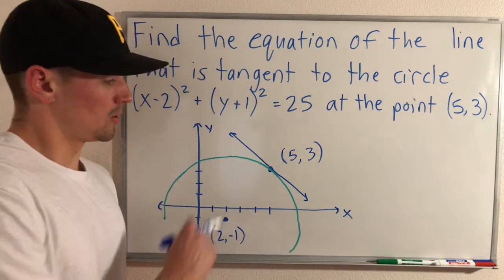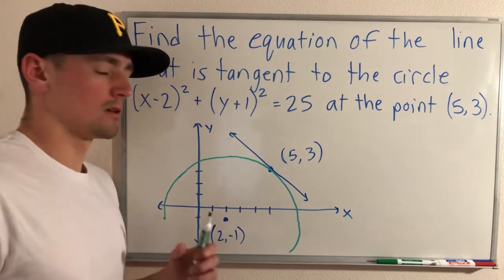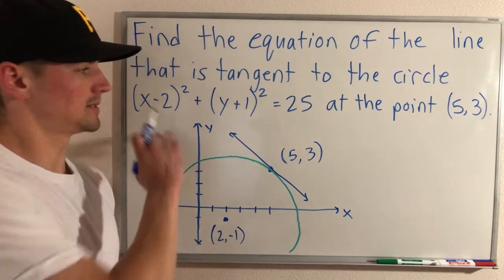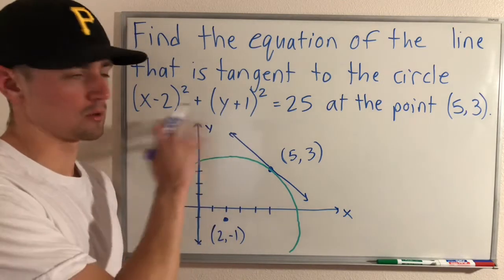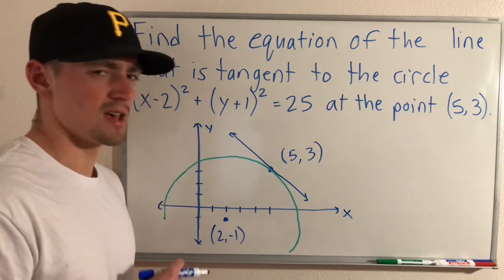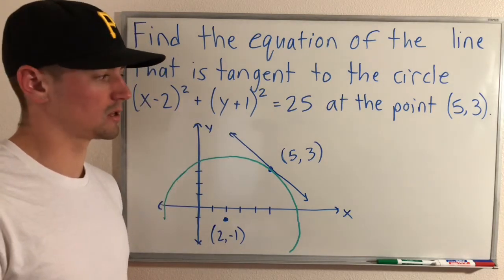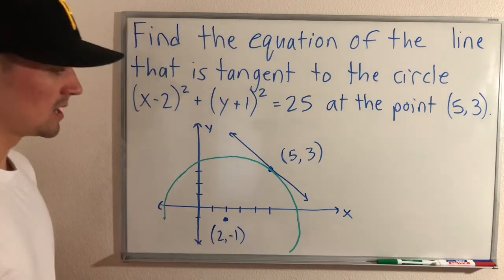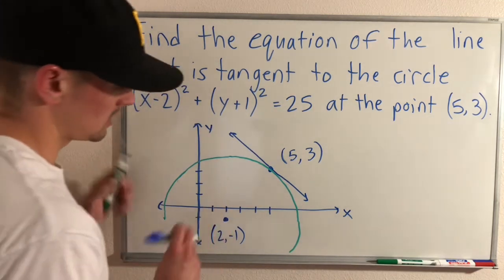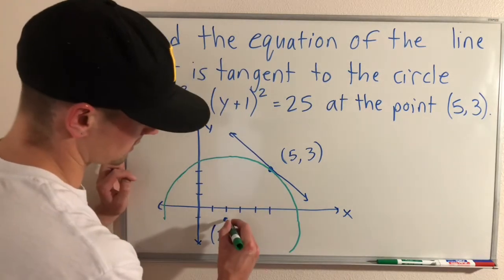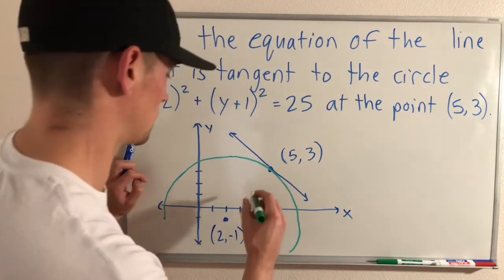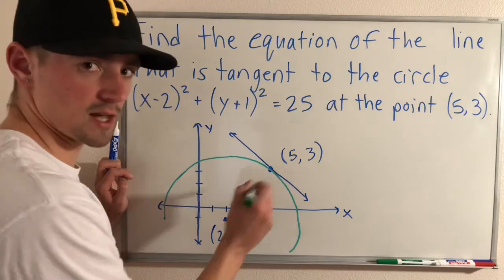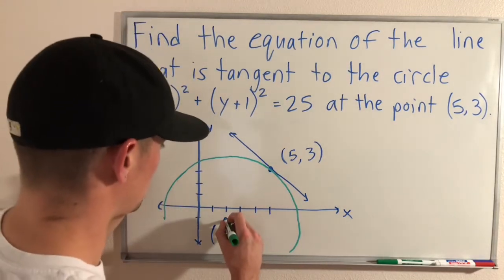So in order to find the equation of this line, like I said, we could take implicit differentiation applied to this circle here and go about it just like I have in some of my other videos about tangent line equations. But what we can instead do is think about the line that goes from the center of the circle to this point that we're trying to look at the tangent line at that point. So let's think about this line for a second.